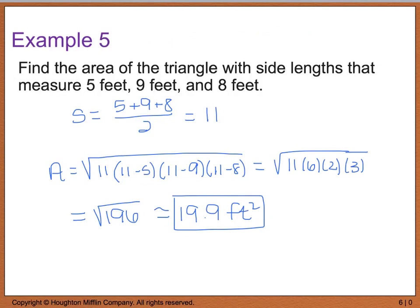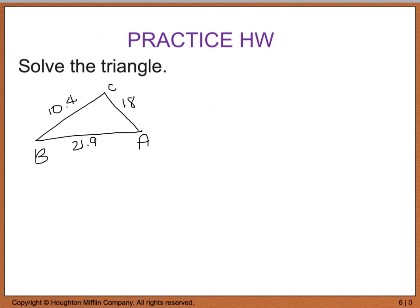This example concludes section 6.2, but we do have a practice problem. Solve the given triangle where side length A is 10.4, B is 18, and C is 21.9 — find all three angles A, B, and C. I will be checking this tomorrow in class. I hope you have a good night and I'll see you tomorrow.